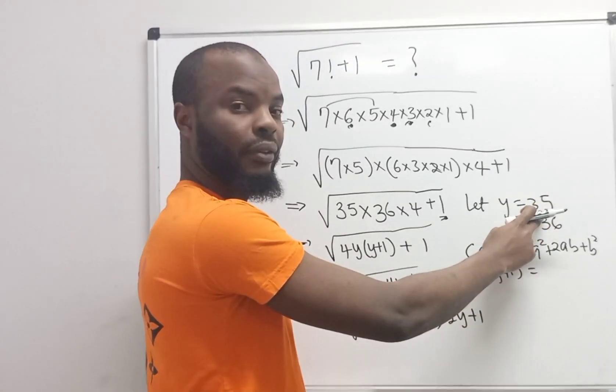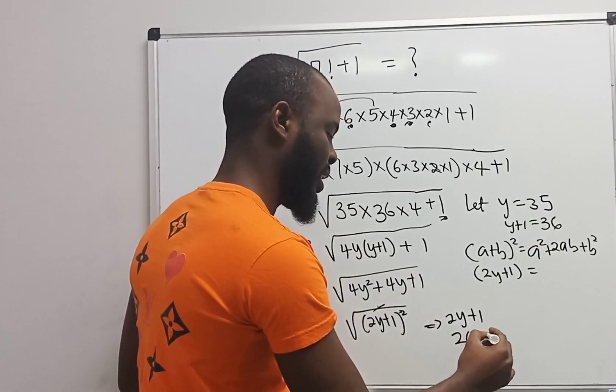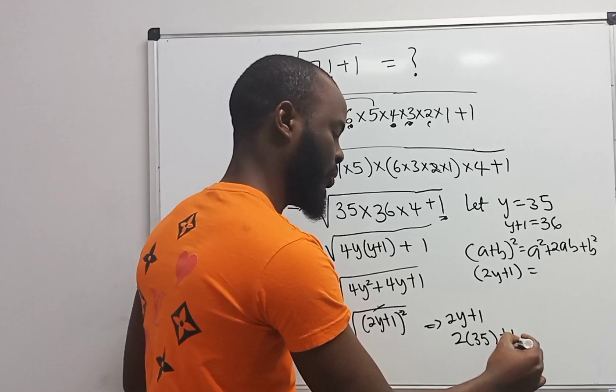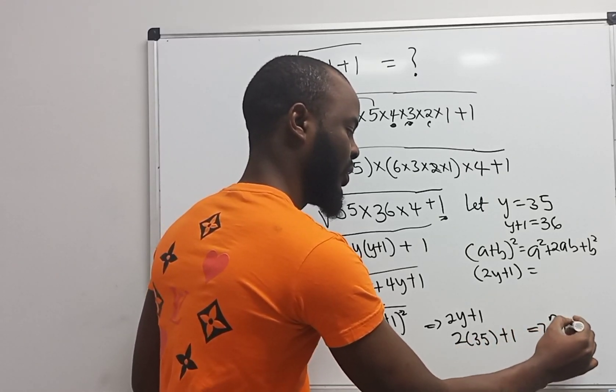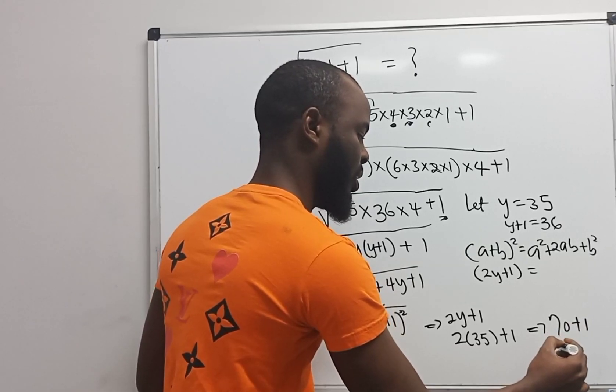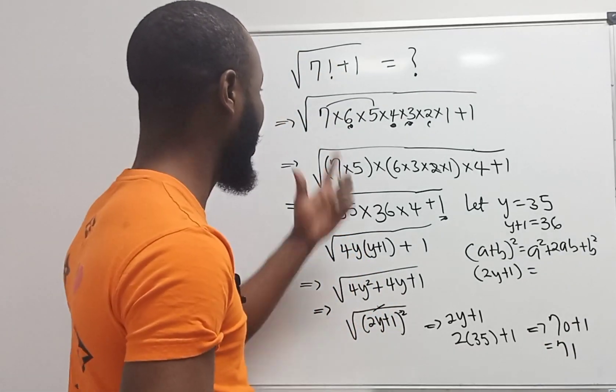y is 35. So here I have 2 times 35 plus 1. 2 times 35 is the same thing as 70, plus 1, which is 71. You can see how to do this without the use of a calculator.